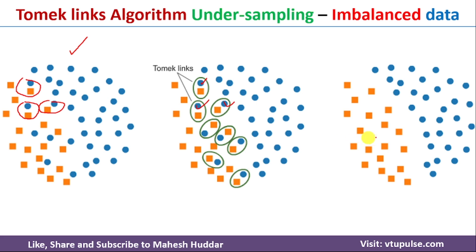Once you perform this operation you will get a new dataset. Comparing this new dataset to the original, the new one is more balanced. After identifying the TomekLinks and removing examples from the majority class, we get a somewhat balanced dataset. It may not be perfectly balanced, but we achieve a significantly more balanced dataset.